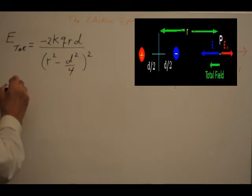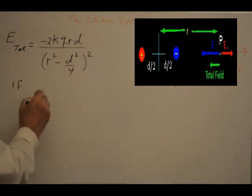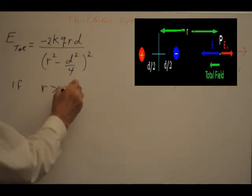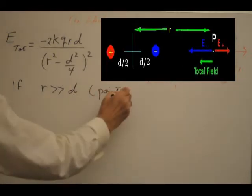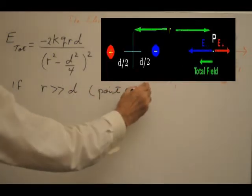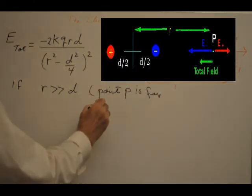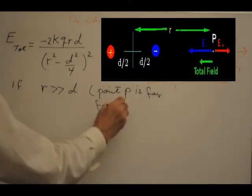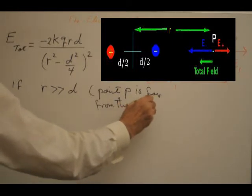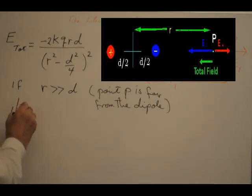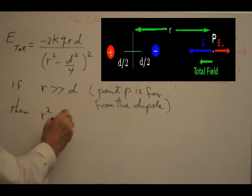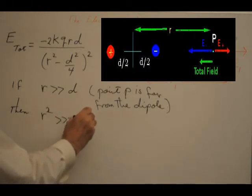Let us see what happens if point P is far from the dipole, that is, if r is much greater than d. In this case, r squared will be a lot greater than d squared, so d squared can be ignored, and the expression becomes simplified.